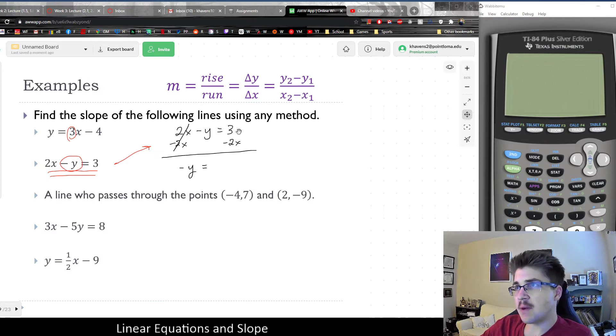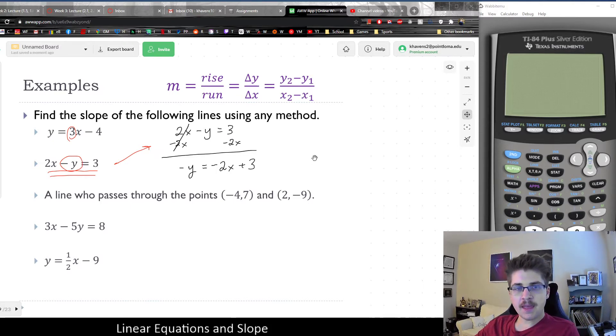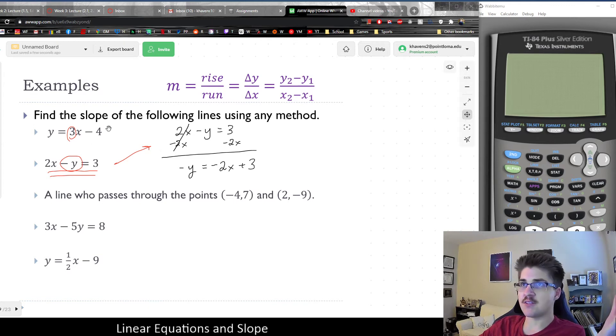And that would give us negative y is equal to, you could write this as 3 minus 2x, but I'd rather write it as negative 2x plus 3 because this is a more common way. Usually, we write the x term first and the number term second just as a convention because that's how we did it with slope-intercept. And the last thing is, y is negative, which we don't want. We want it to just be y.